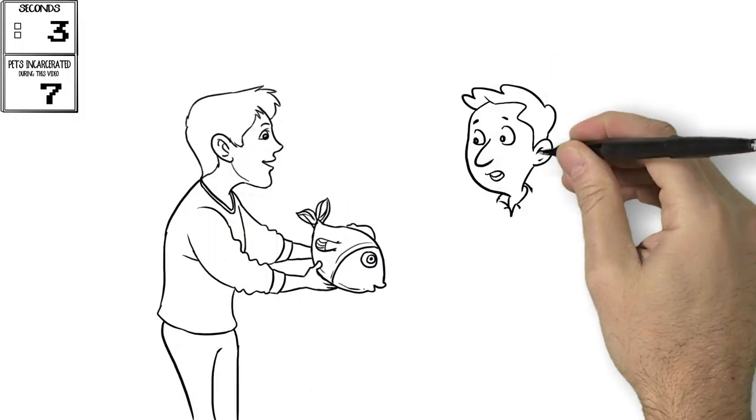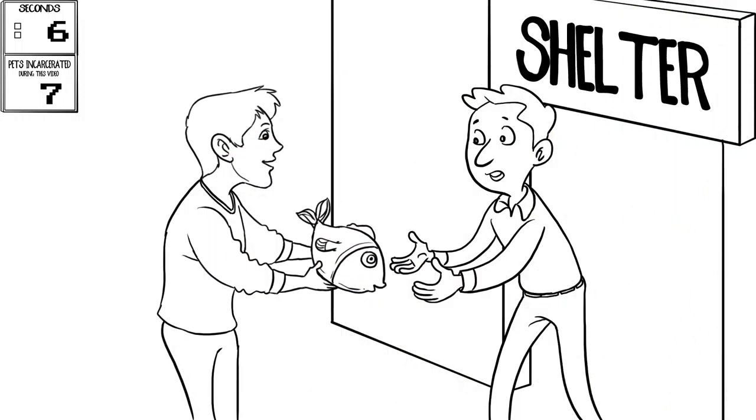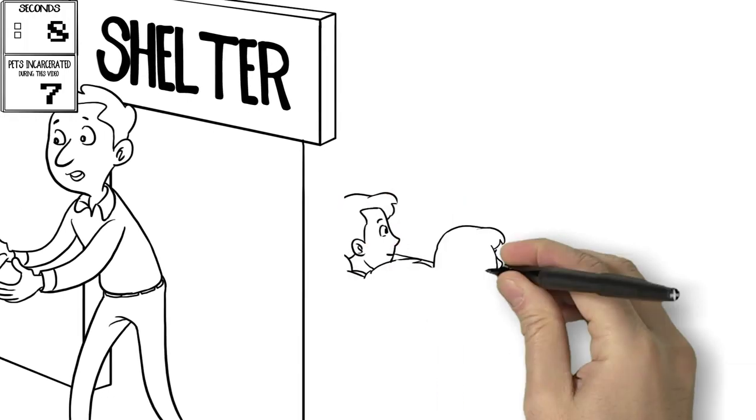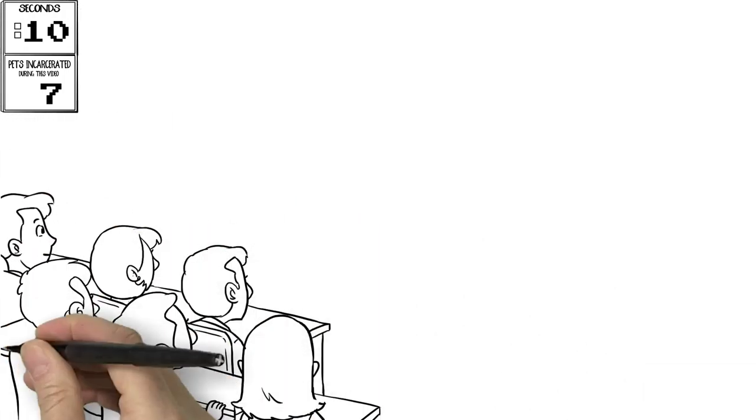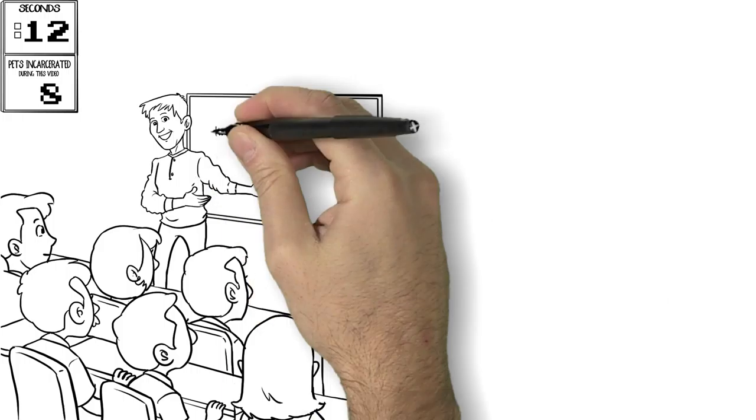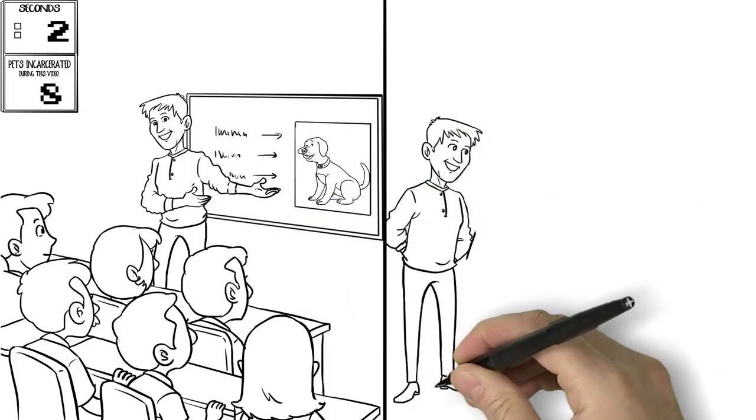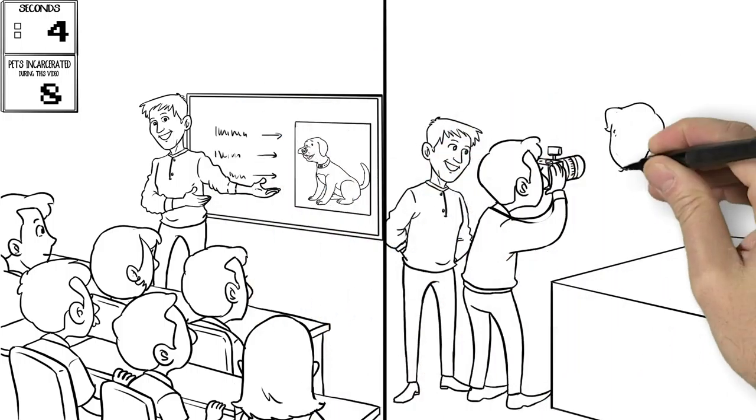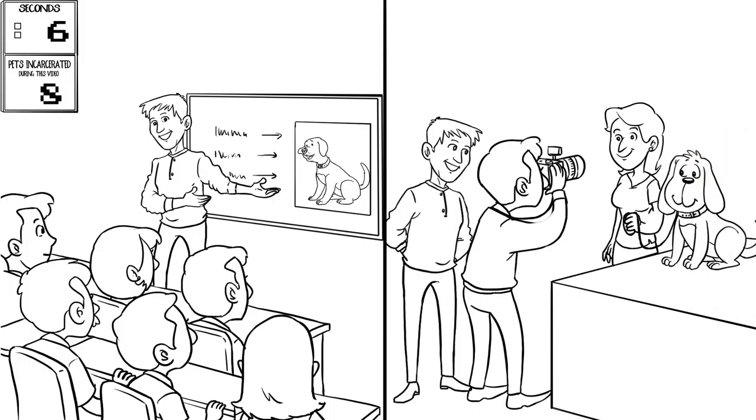Then it hit us. We had been handing them fish instead of teaching them to fish. So we developed a crash course that can turn any shelter employee or volunteer into a life-saving photographer and make sure they have the photography equipment to use those skills.